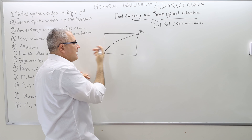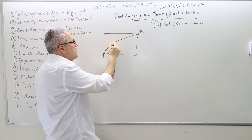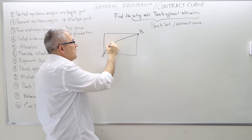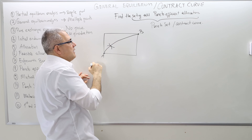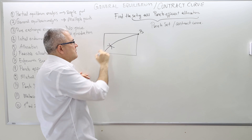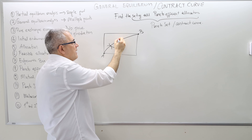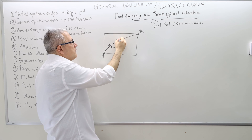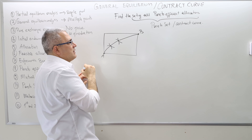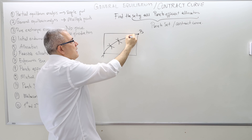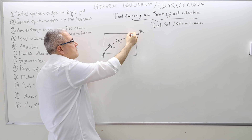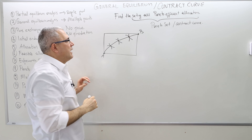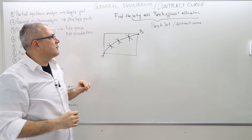The nice thing about the contract curve is that at all these points, the indifference curve of agent B and the indifference curve of agent A are tangent to each other. Pick another point — indifference curves of A and B are tangent. Pick another point — again tangent to each other.